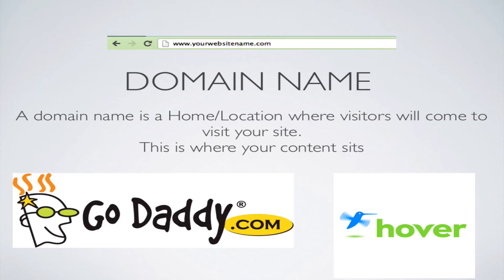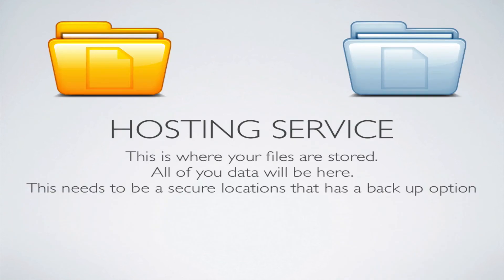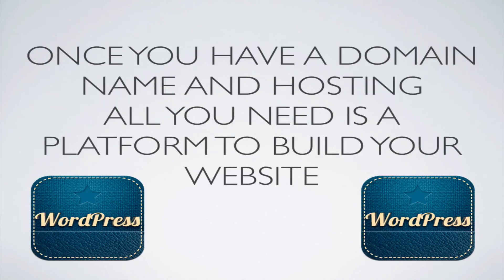Alright guys, let's do an overview of what we've talked about. First, we're going to need a domain name — go to GoDaddy or Hover.com and purchase one for as little as five bucks; this will be your home location for your website. Next, we need a hosting service — I spoke about Bluehost, but there are many other companies. And lastly, we're going to need a way to build our website — I suggest WordPress. That is the three-step process of getting your website online.